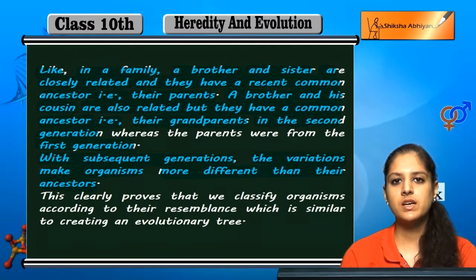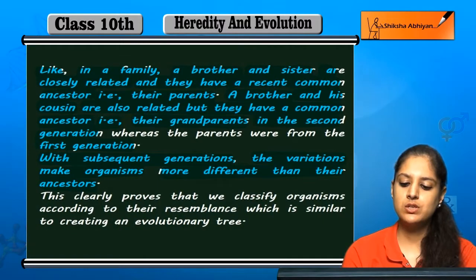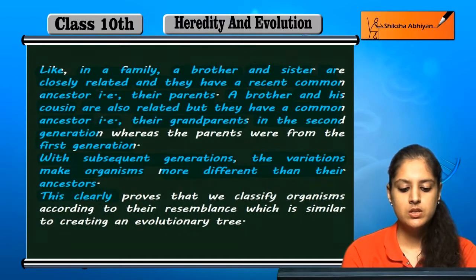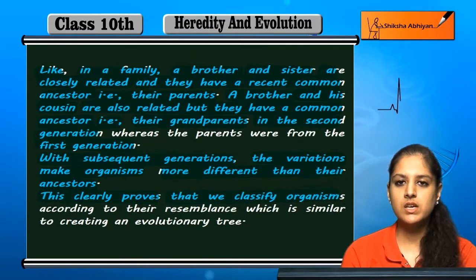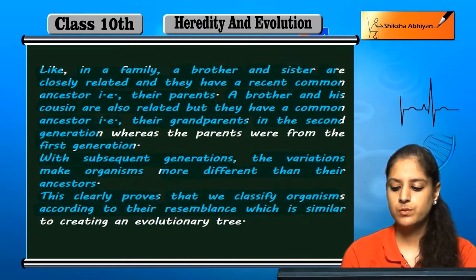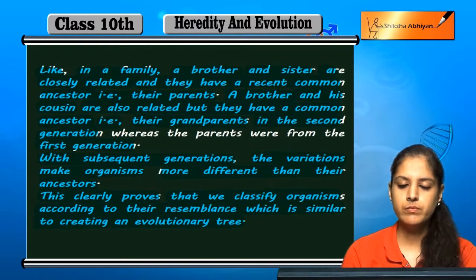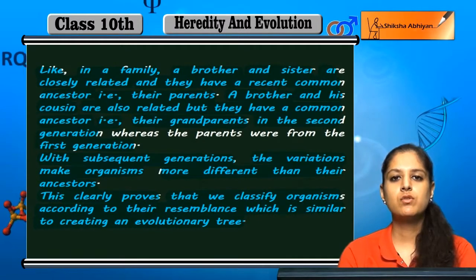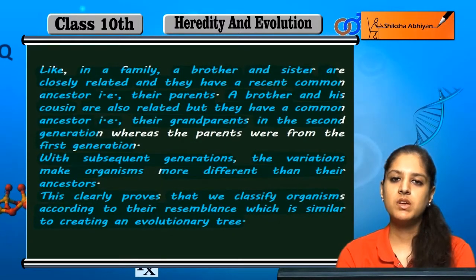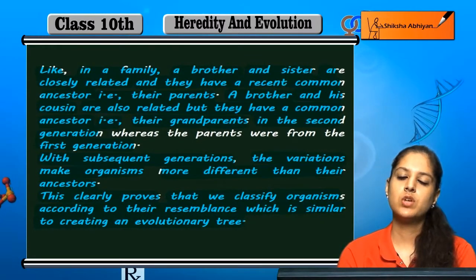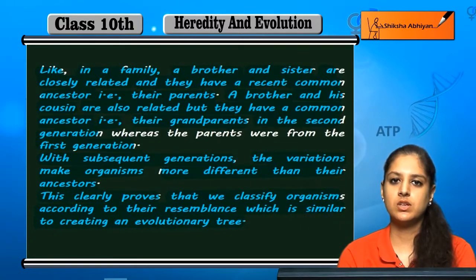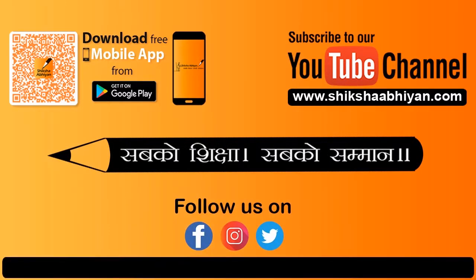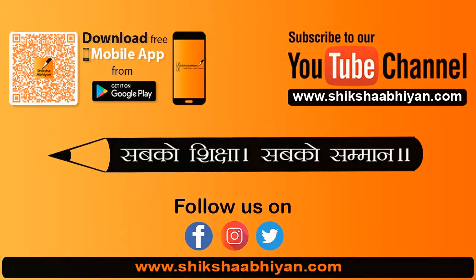In subsequent generations, variations make organisms more different from their ancestors. This clearly proves that classification of organisms according to their resemblance is similar to creating an evolutionary tree. So we can say that making a classification is similar to making an evolutionary tree, and therefore evolution and classification are almost interlinked.